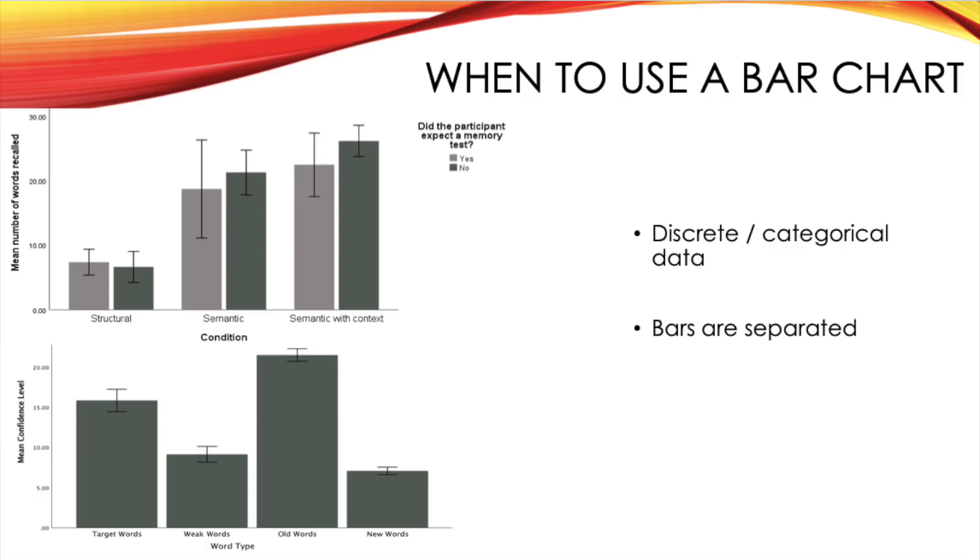So the first type of graph I'm going to be looking through is a bar chart. When do you actually use a bar chart? You use this type of graph when the data you're provided with is discrete and categorical, and when your data is drawn it's important to remember that the bars are separated.